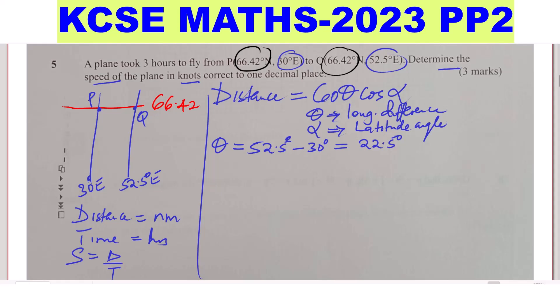The latitude angle is given by, both of them are located on the latitude 66.42. That is alpha. The latitude angle is 66.42, the latitude along which they are located. Now we get the distance.